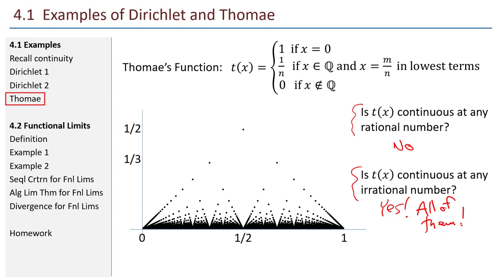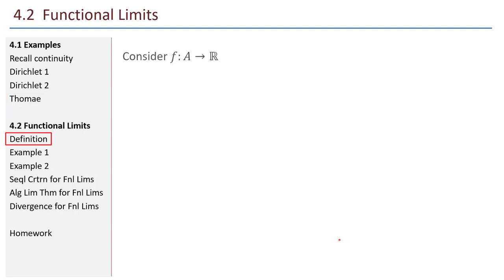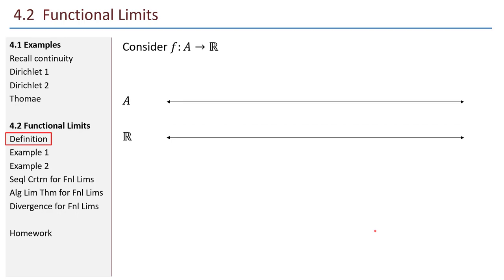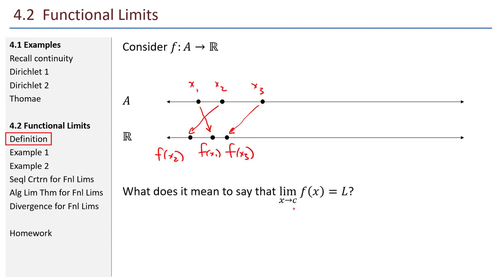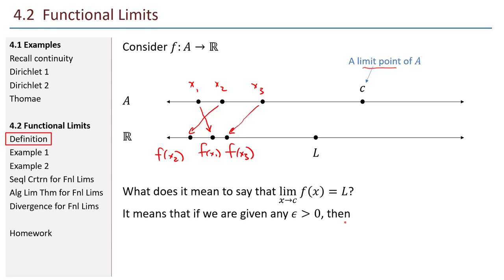So those are three weird examples of functions. We'll start 4.2 now and begin a serious study of the limits of functions. Consider the function F with domain A that maps into the real numbers. I'll express my domain and co-domain as two number lines — some points in my domain get mapped onto points in my co-domain. What does it mean to say that the limit as x goes to c of f of x equals L? Well, I have a point c that is a limit point of A. C doesn't have to be in A, but it is a limit point, which means I can get arbitrarily close to it with points of A.